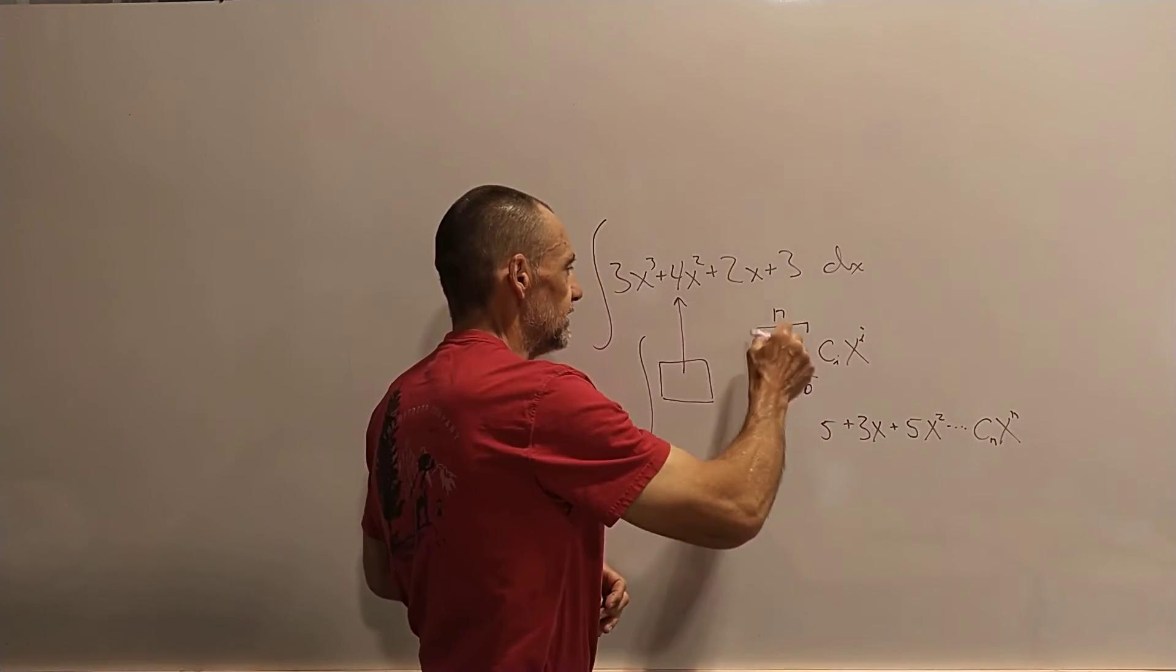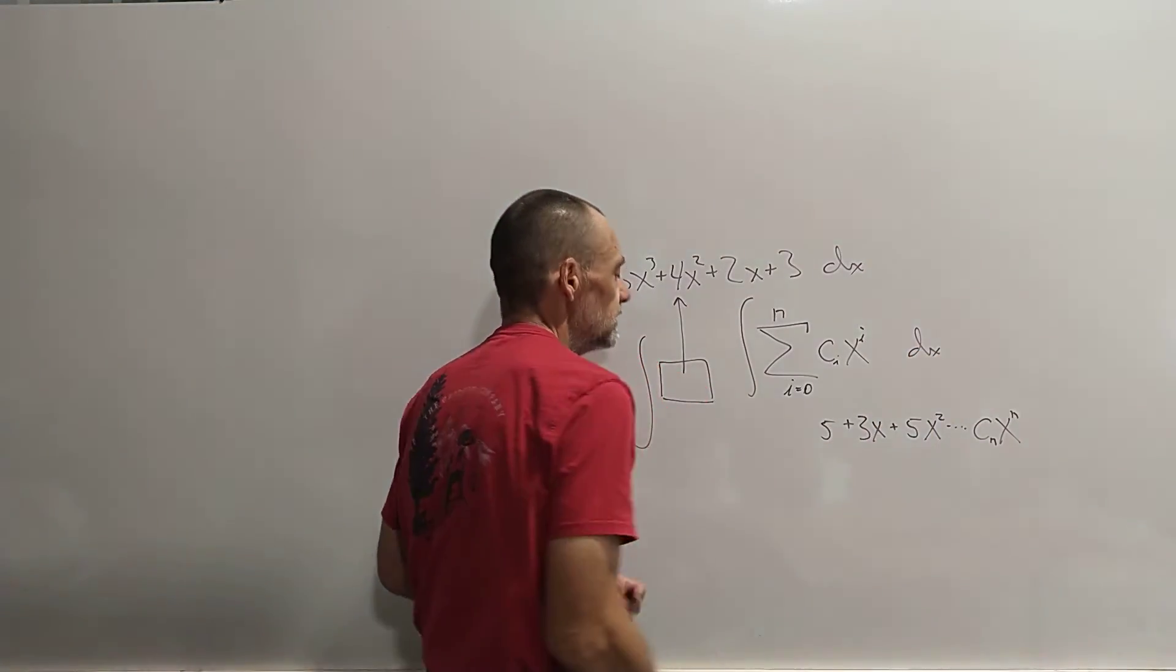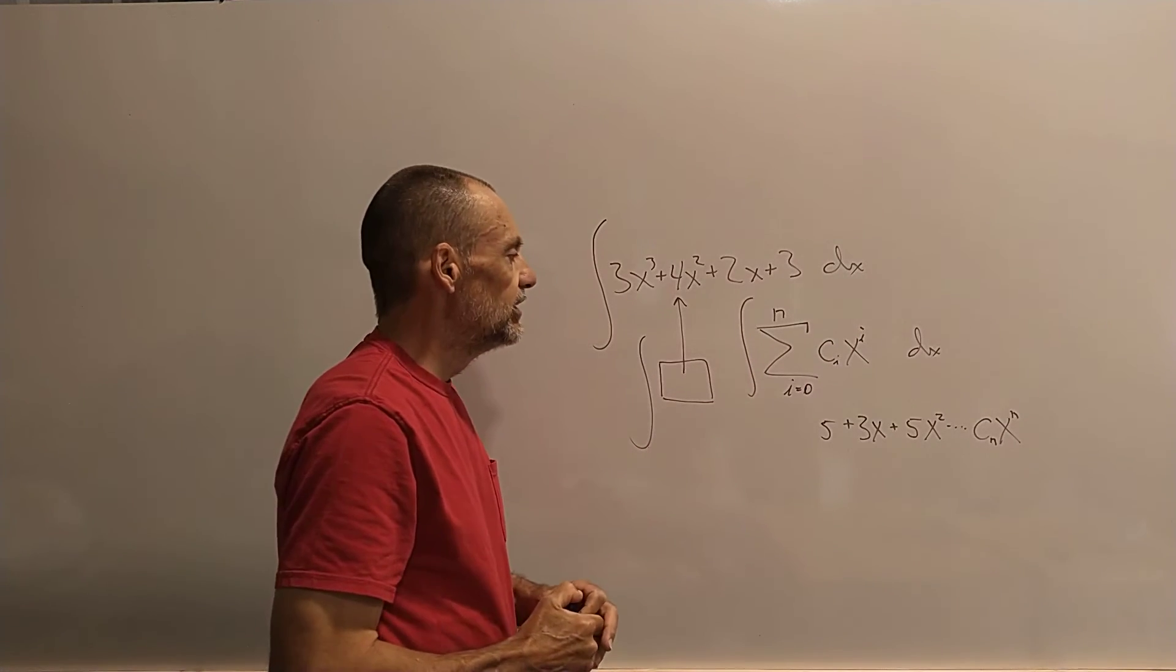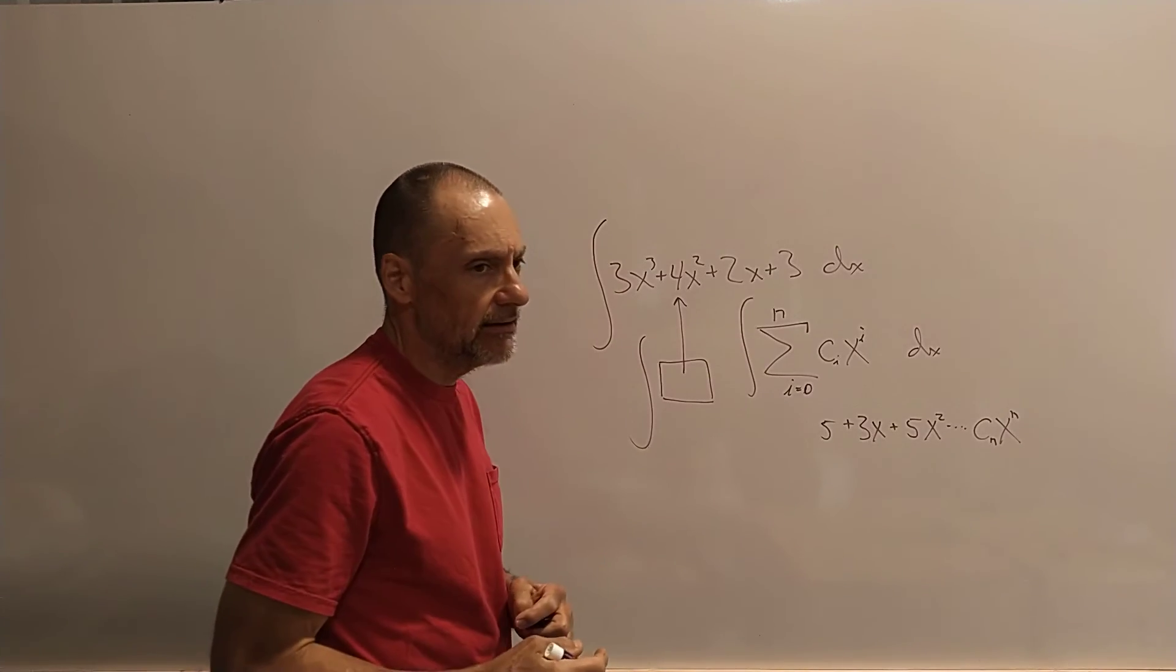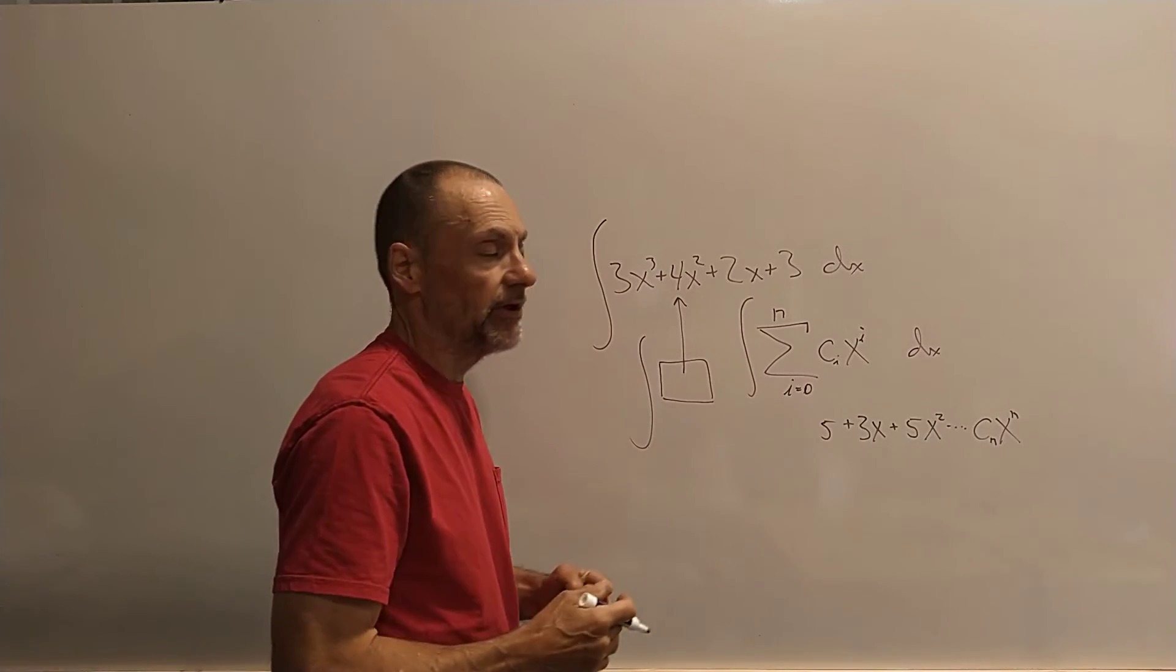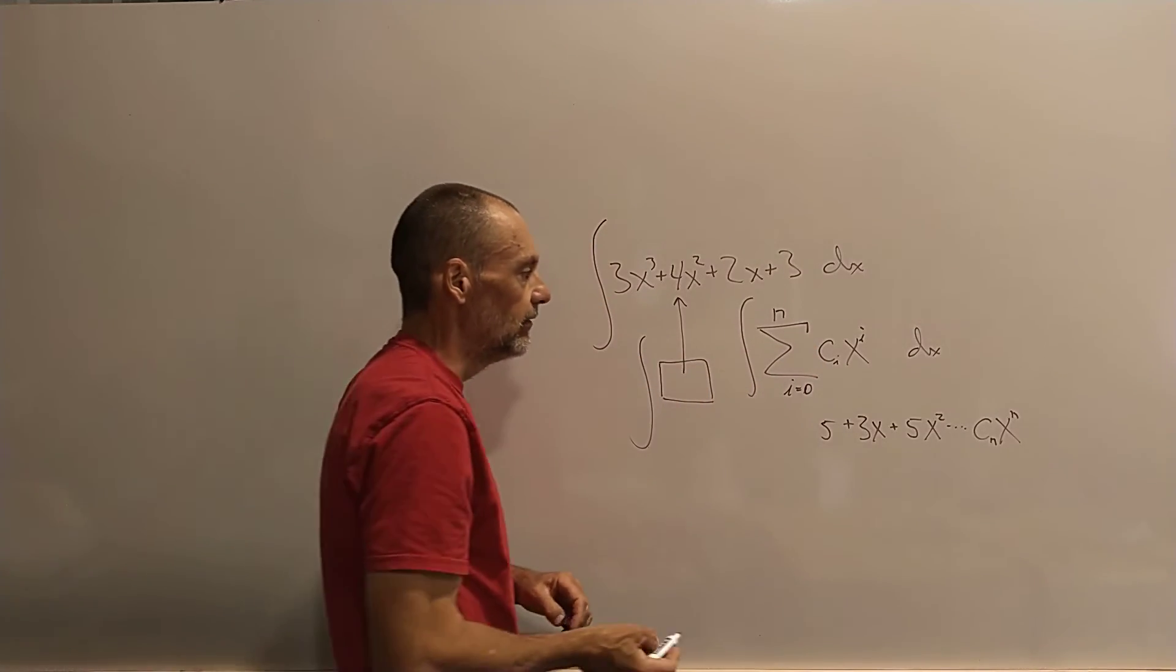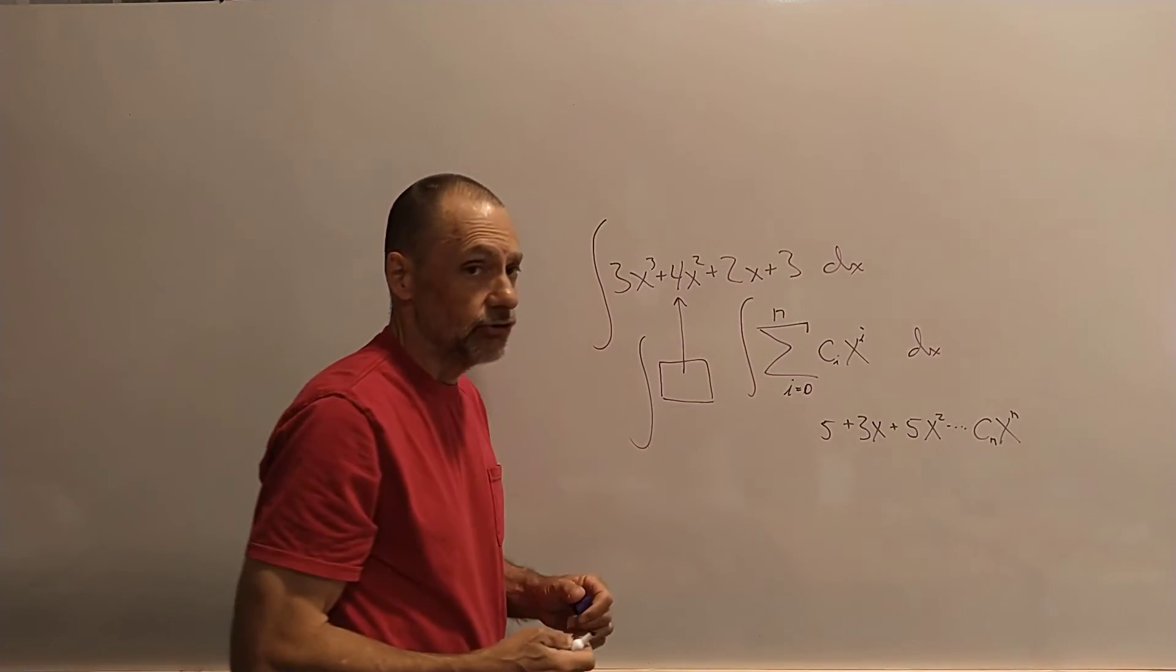So to integrate this thing, this is going to be super easy, because all we're going to do is we're just going to add 1 to the exponent, multiply by the reciprocal. So that's really one of the main reasons why we're heading down this road with series at this point.